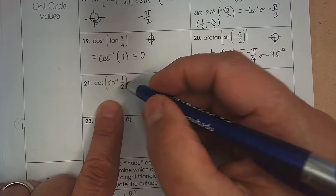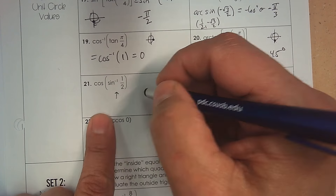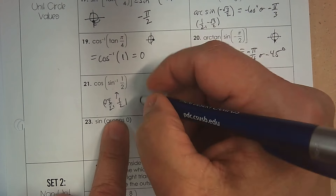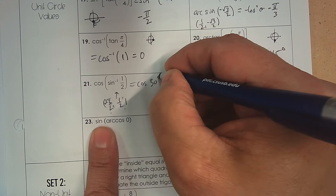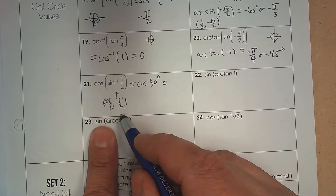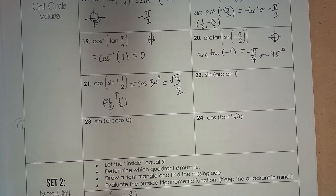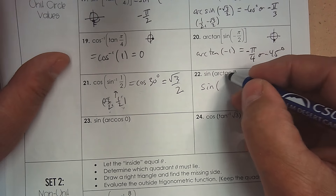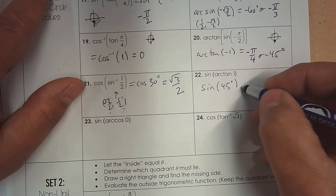Number 21: the inverse is on the inside, so find the angle first. When the y-coordinate is root 3 over 2, the angle is 30 degrees — wait, the y-coordinate root 3 over 2 gives 60 degrees, so arc sine of root 3 over 2 equals 60 degrees. Then the value of cosine: we already have the point, so the x-coordinate is root 3 over 2. Number 22: arc tan of 1 gives the angle 45 degrees.